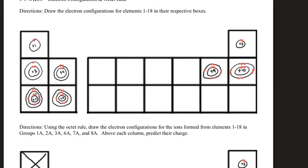This video is going to cover how to do the 3-3 worksheet and the 3-4 worksheet. It's not going to cover everything, but it's going to give you an idea of how to complete it if you were maybe not sure. In the first section of the 3-3 worksheet, it asks you to draw the electrons as a configuration for elements 1 through 18, from hydrogen to argon.